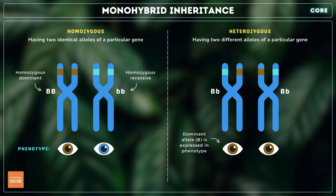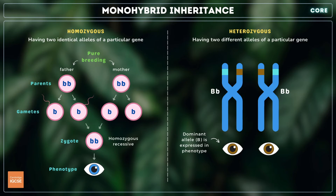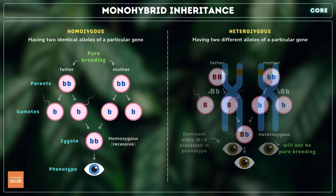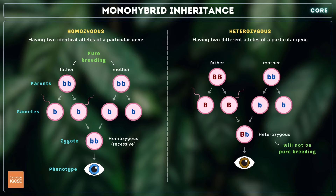If, however, they have two different alleles — for example, one that codes for brown eyes and one for blue — they are referred to as heterozygous for the gene. When two identical homozygous individuals breed, all offspring will have the same alleles and consequently the same phenotype as the parents; this is referred to as pure breeding. If both parents are homozygous for different alleles, the offspring will all be heterozygous. Heterozygous individuals are not capable of pure breeding, as their offspring may have different combinations of alleles and consequently different characteristics.